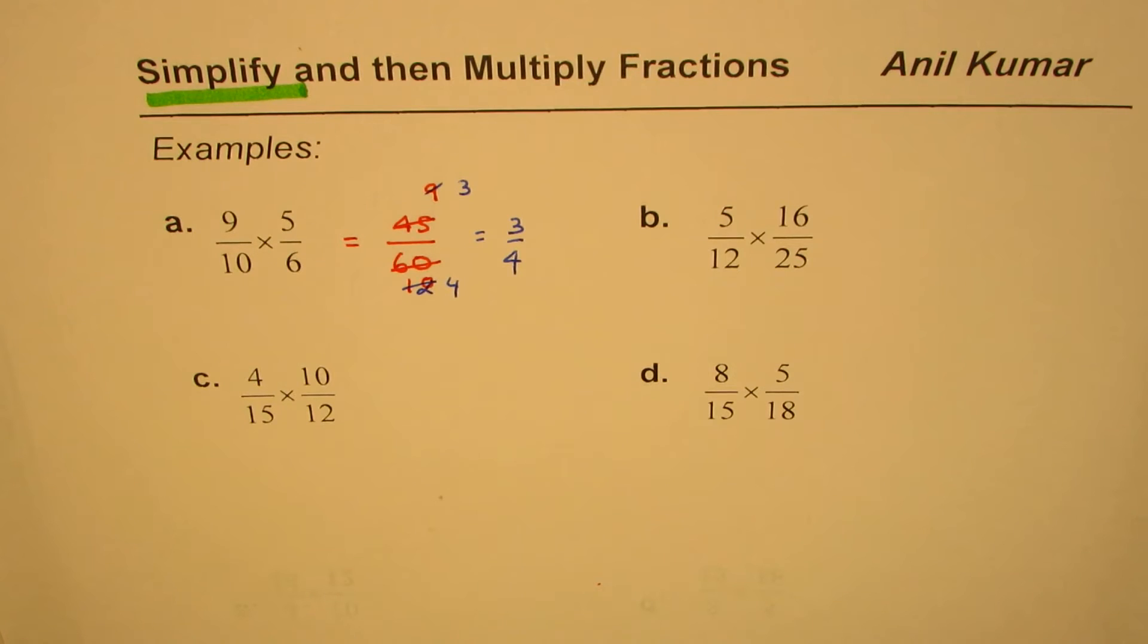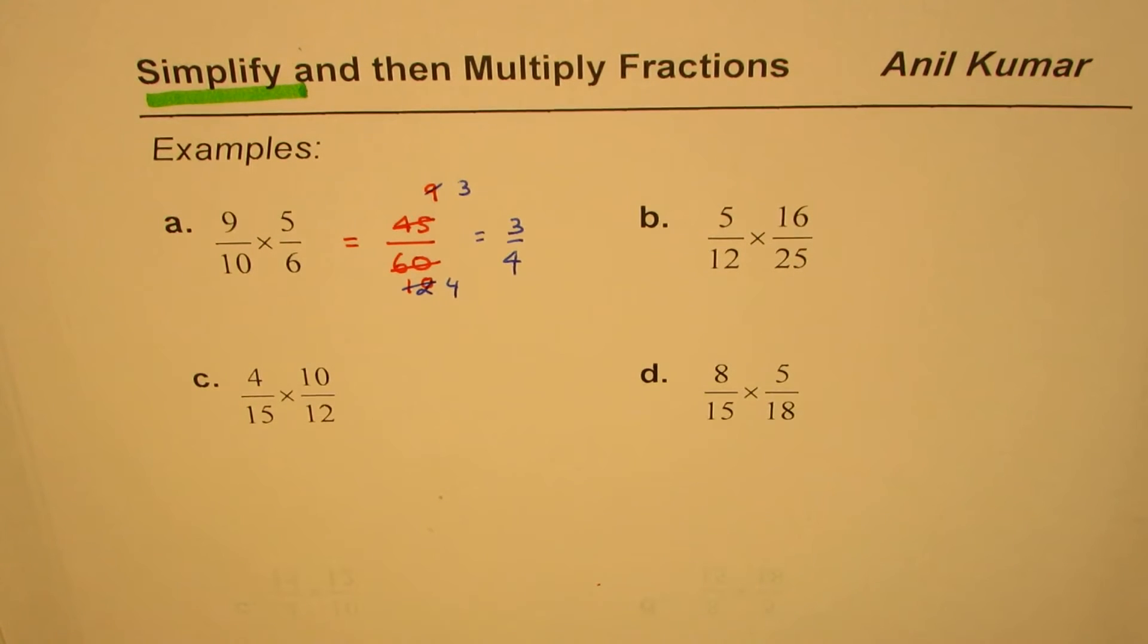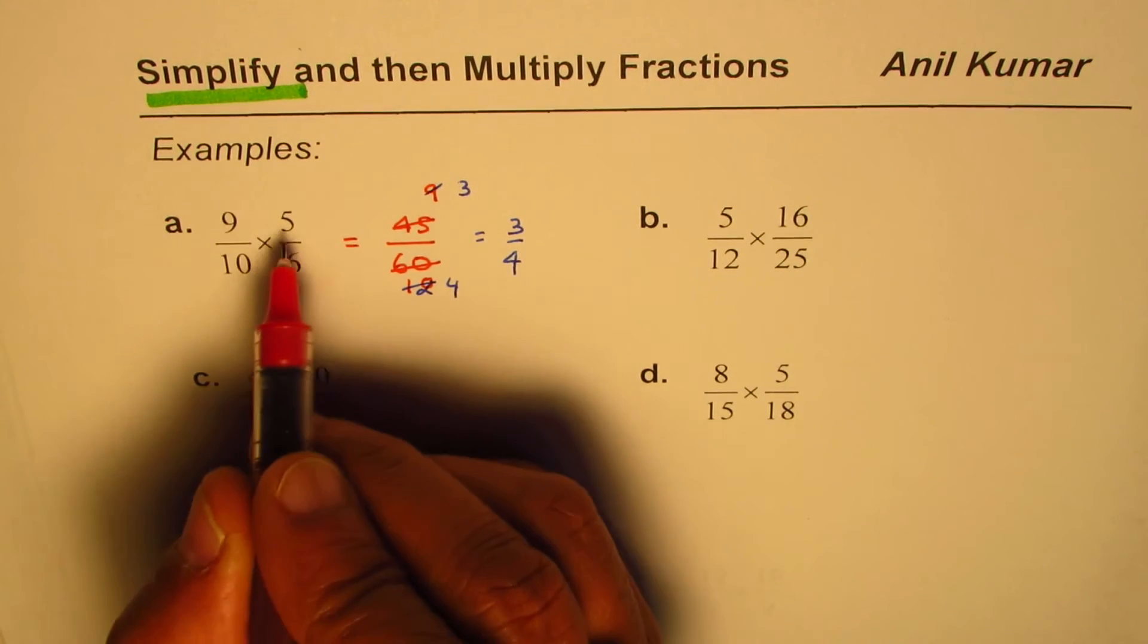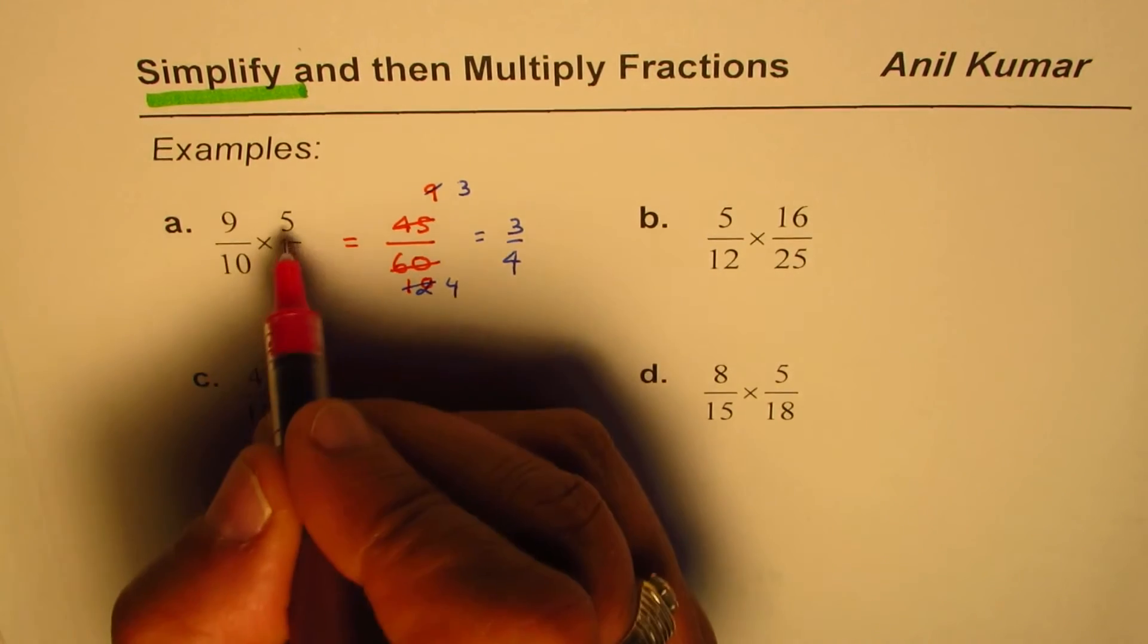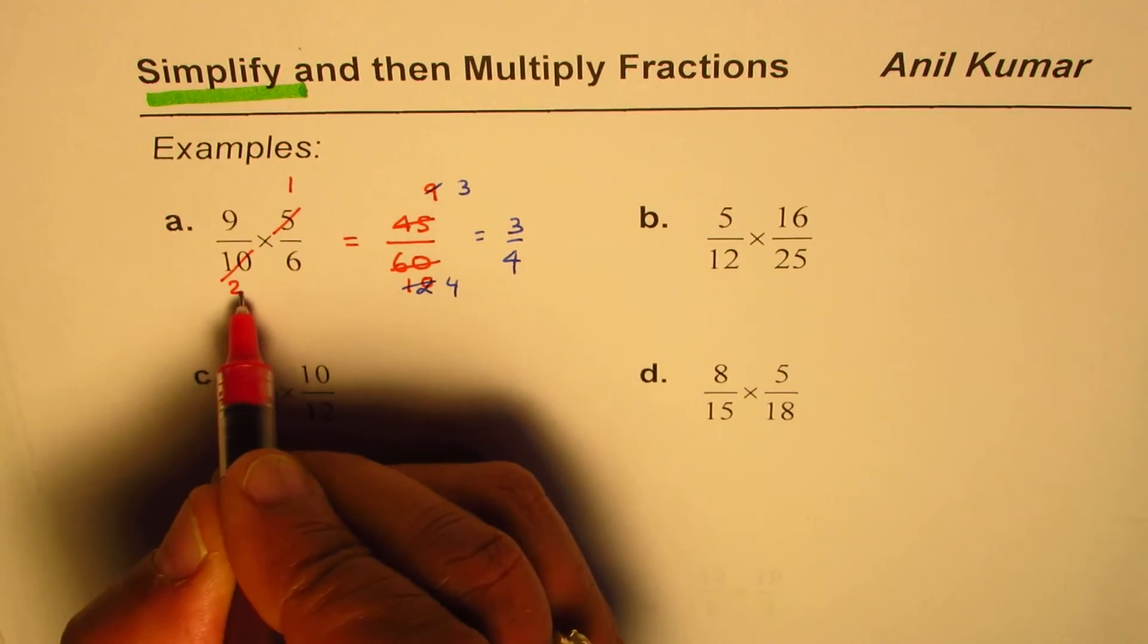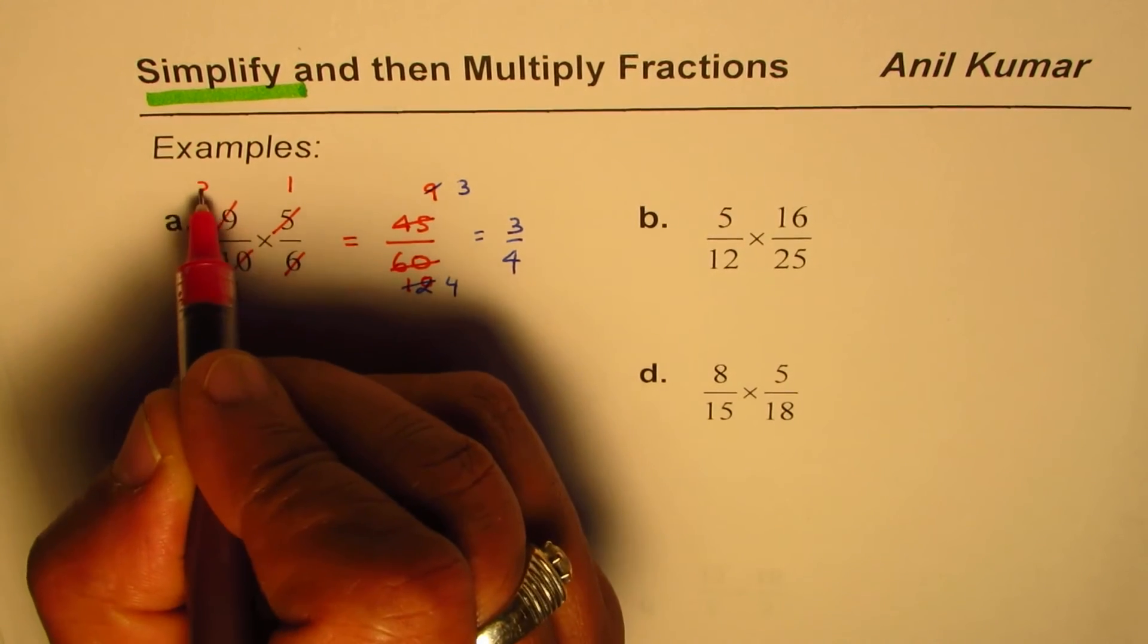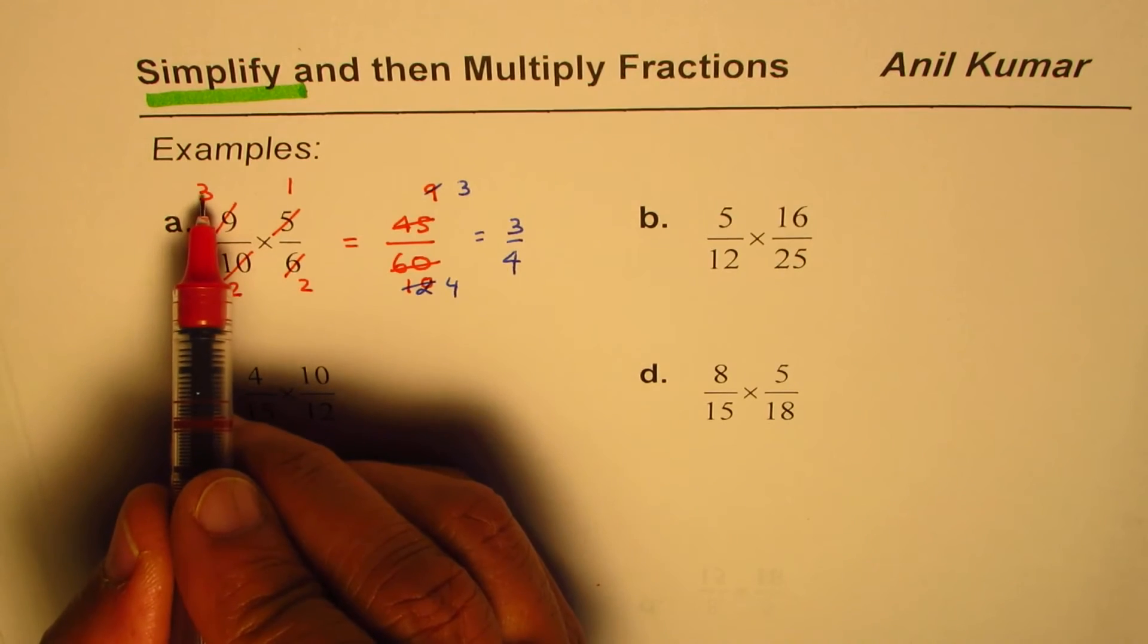I hope you've got the concept. Now let us redo this question by simplifying and then multiplying. Simplify means you already have numbers here in fraction form. You can divide numerator and denominator by 5, so 5 goes to 1 and 10 goes to 2. Here we can divide by 3, so 9 becomes 3 and 6 becomes 2.